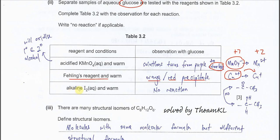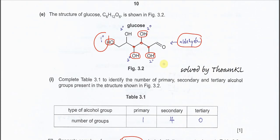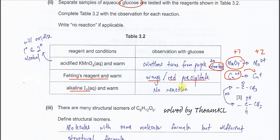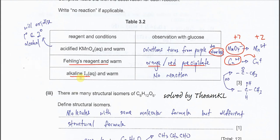For the last reagent, alkaline iodine and warm, we have to check whether it has methyl ketone or not. This is an aldehyde, not methyl ketone. None of these alcohols can form methyl ketone. Therefore, no reaction for the last one. When you look for reaction with alkaline iodine, this is the iodoform test. You have to look for the methyl ketone group or the alcohol group CHOHCH3.